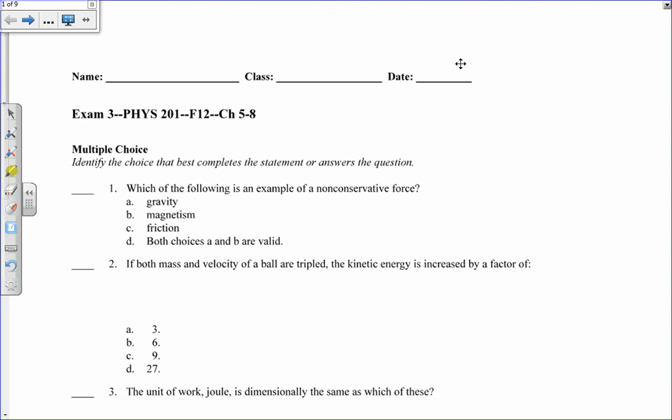All right, this is exam 3 for Physics 201, Fall 2012. Which of the following is an example of a non-conservative force? All right, well, gravity and magnetism are both field forces, and those are conservative. They do conserve energy, but friction does not conserve energy, so it is non-conservative, so C.